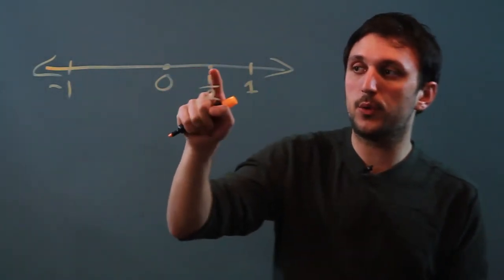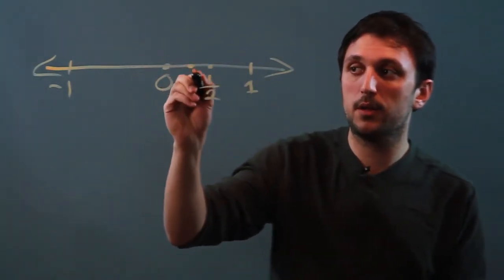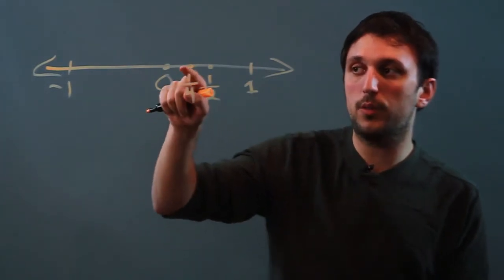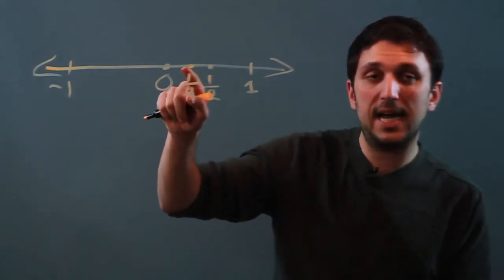Then you can say, between one half and zero halfway is one fourth. So you're then looking, that's a fourth. That's one half of a half.